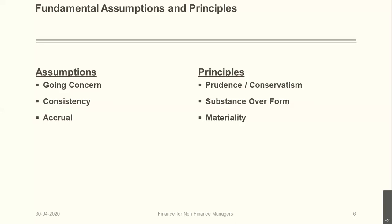Principles: prudence or conservatism means all estimated future losses must be recognized, while future incomes and gains cannot be recognized. Substance over form means a transaction has to be analyzed in substance over its legal form — this is very important in deciding the accounting principle and recording of transactions. Materiality: all accounting principles and policies will be based on materiality — what is important. In certain cases materiality will not apply; for example, in cash, if one rupee is missing due to embezzlement, that must be correct. Materiality has to be applied on a case-by-case basis.